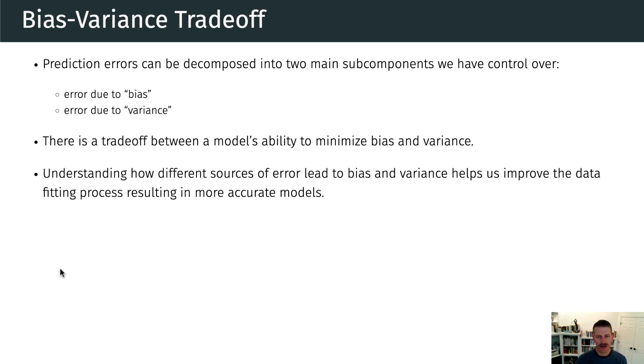So when we think about our prediction errors, we should be thinking that they're actually made up of two main subcomponents. There's actually three subcomponents. The third one is just due to natural variability or randomness in our data. But the subcomponents of our prediction errors that we do have some control over is what's called bias and variance. So there's error that can be due to bias and error that can be due to variance.